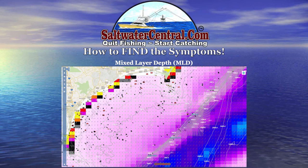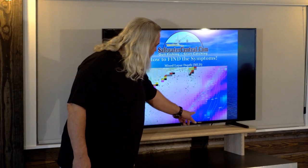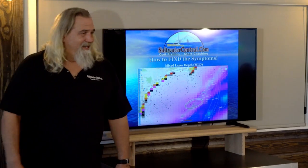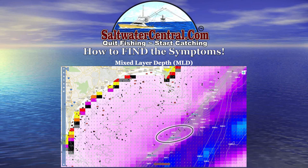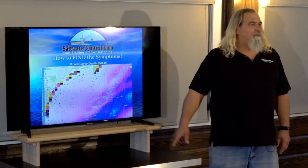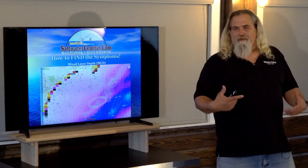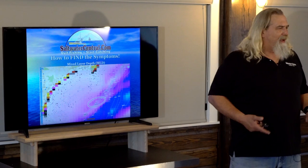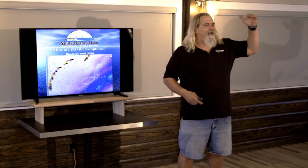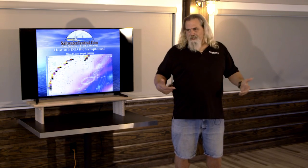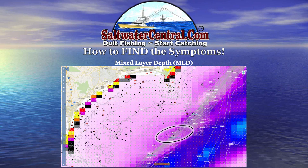There's a mixed layer depth shot — high, low, high, low, and you go fishing right there. Isn't it funny that all these shots — temperature, chlorophyll, currents, mixed layer depth — have wound up with the exact same spot? Mixed layer depth is about as close as I've ever come to something that actually draws the X on the map for you. If you can find where it goes from X to Y, you're in the money. Mixed layer depth is the heat, in my humble opinion.